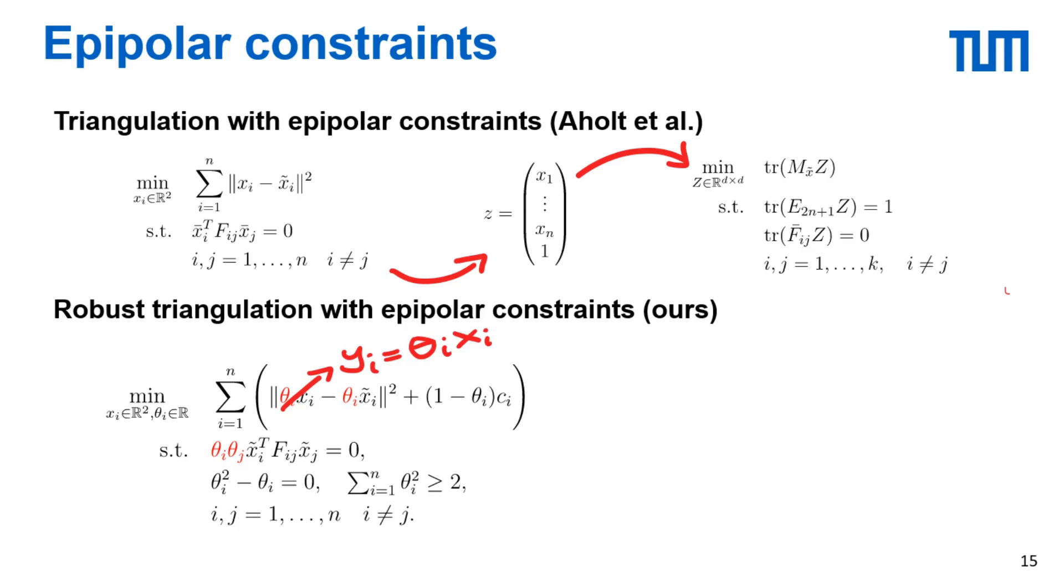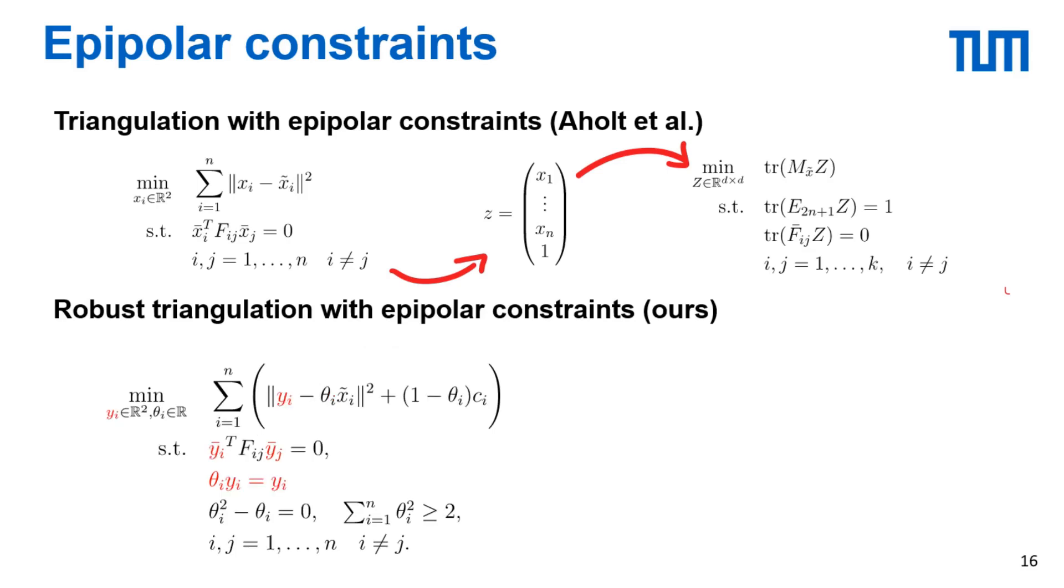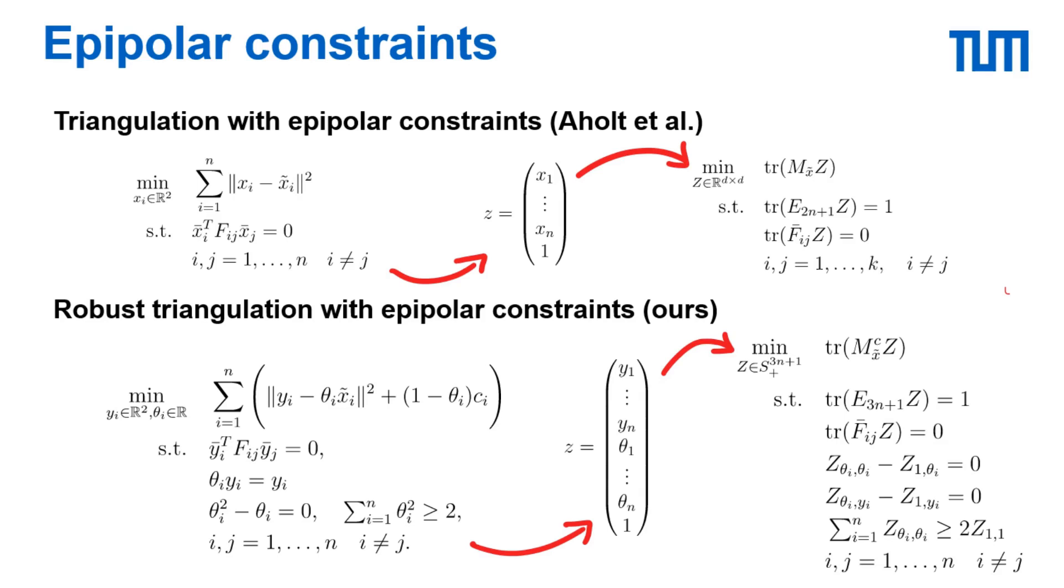Then as a final step we re-parameterize the problem in terms of new variables y_i which equals theta_i times x_i, which leads us to a second order formulation. To maintain the relationship between y_i and the original problem variables we also have to introduce a new extra constraint that theta_i times y_i equals y_i. We can then obtain the relaxation by stacking all variables into a single vector as shown here. After solving the problem we can obtain the final 3D point by first computing x_i from the y_i and then finding the intersection of the viewing rays of the inliers which will now satisfy the epipolar constraints.